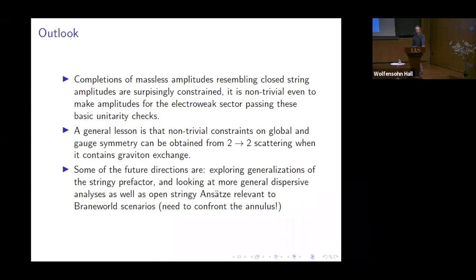During Q&A, a questioner asks whether one could explore more general ansatzes beyond the Virasoro-Shapiro prefactor, noting that the cancellation of poles seemed non-unique. The speaker replies that q-deformed analogs have been considered and are a natural first place to look, mentioning that different solutions to the pole-cancellation condition exist. The speaker notes it's unclear whether there are other solutions beyond the integer-spaced spectrum and the Coon amplitude with its accumulation point.